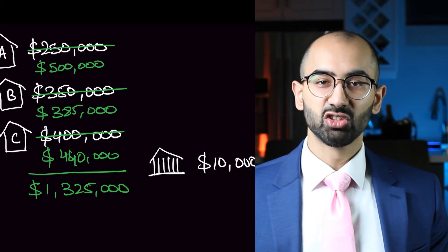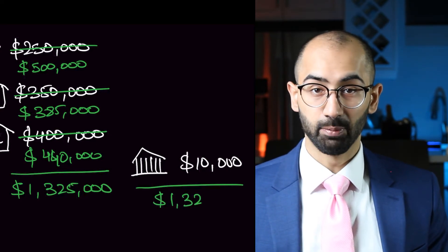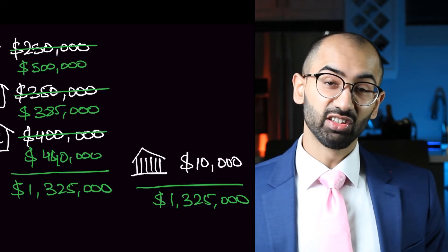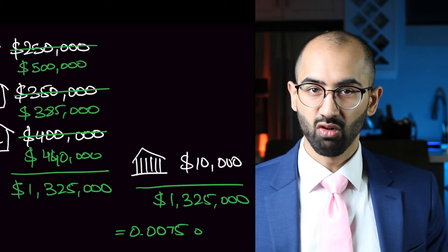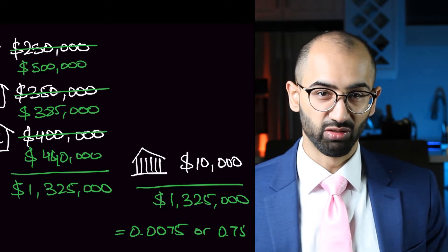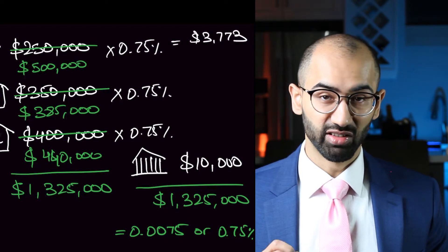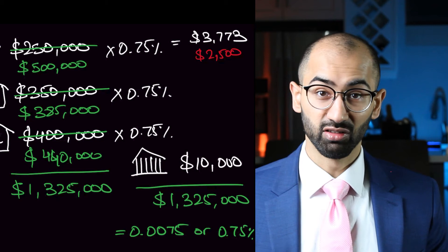Assuming the city still charges $10,000 in taxes and the total sum of all the property values are now adding up to $1.325 million, that gives us a tax rate of 0.0075 or 0.75%. House A pays $3,773, which is a 51% increase from $2,500.